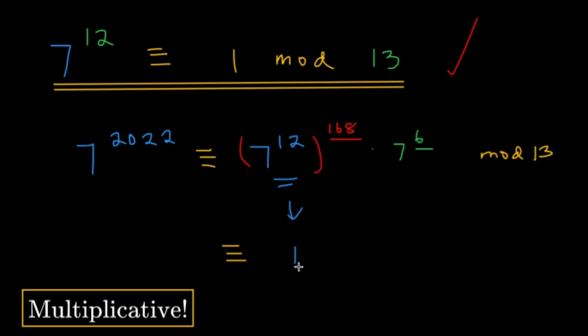So essentially, the 7 raised to 12 becomes a 1, and then the exponent is 168. So you could see here, the reason why we wanted to write in terms of 7 raised to 12 is because this part is essentially gone, because 1 raised to 168, that's just 1. So essentially, I just have to work with this 7 raised to 6, modulo 13.